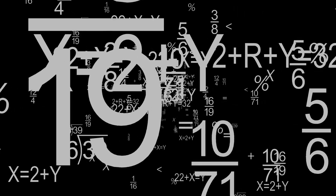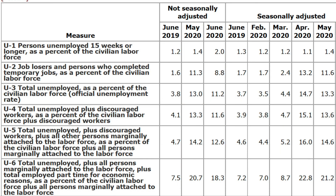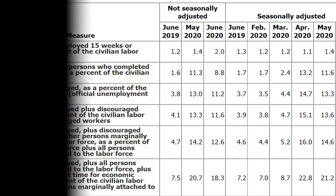Using this information, the BLS calculates several measures of unemployment. The most popular one, usually tracked and reported in the news, is the U3 unemployment rate. But economists actually track several measures of unemployment, and that's how the unemployment data is collected.